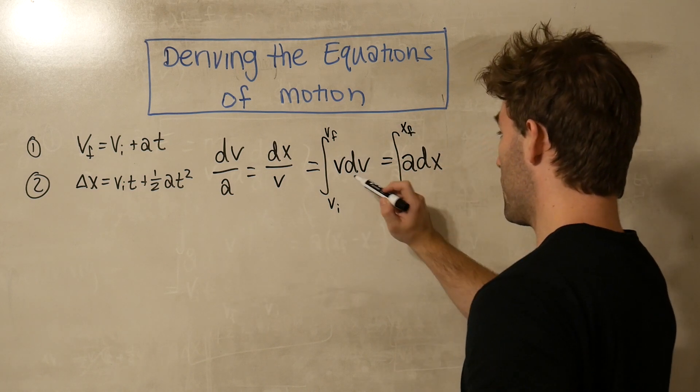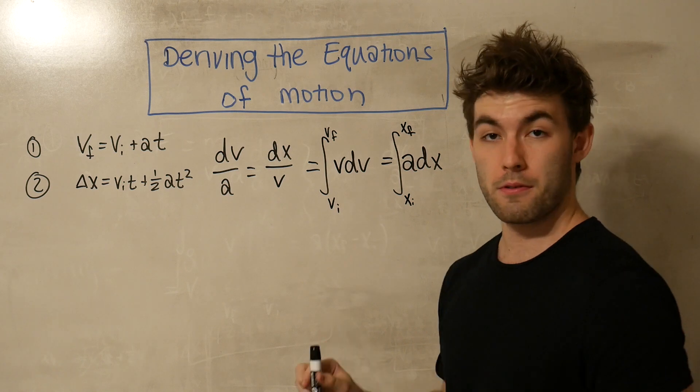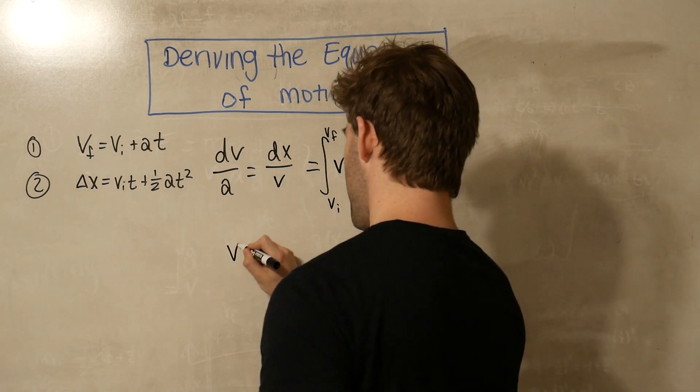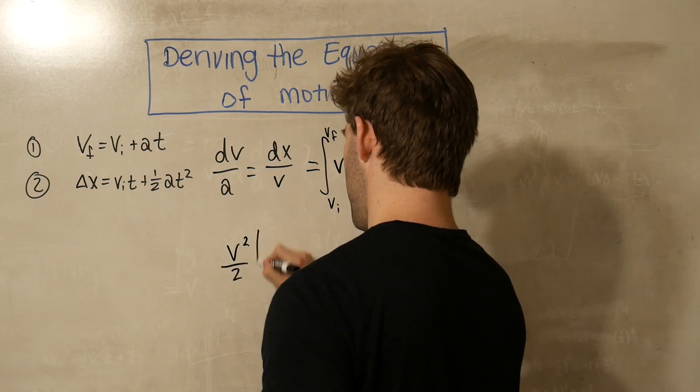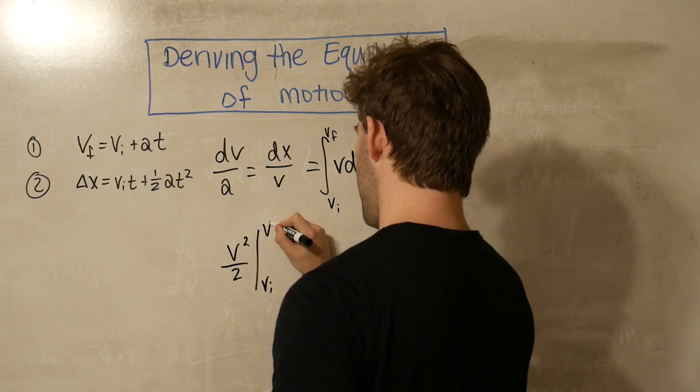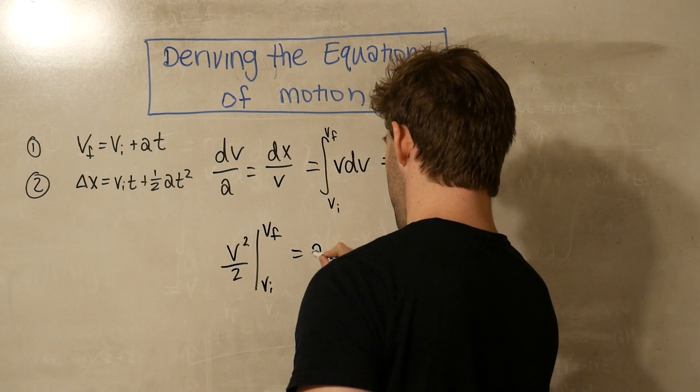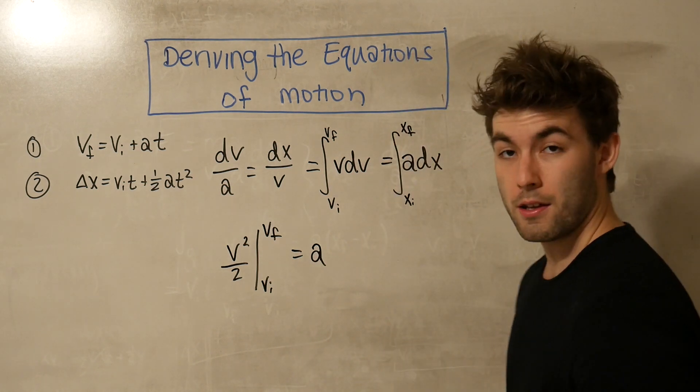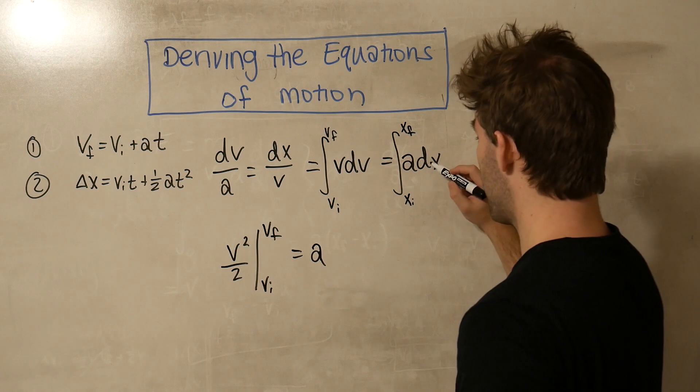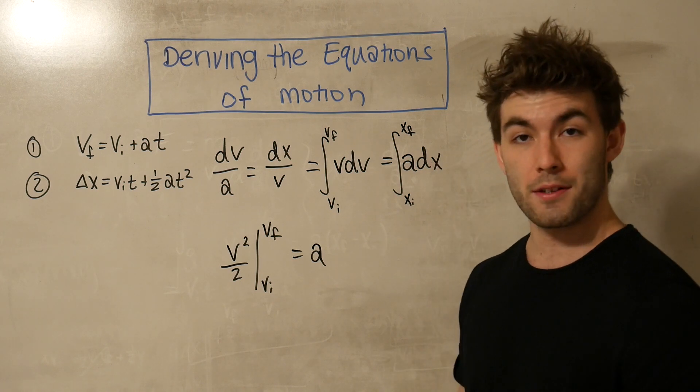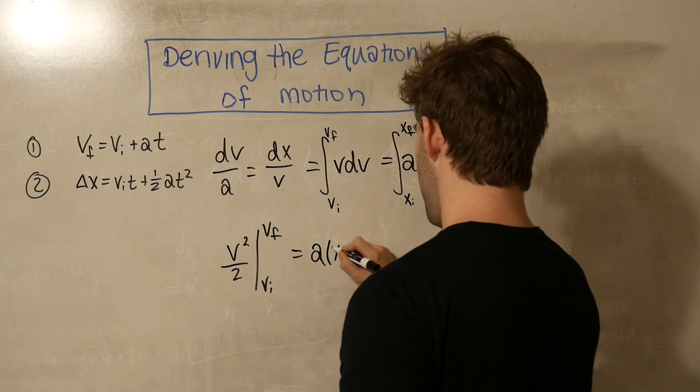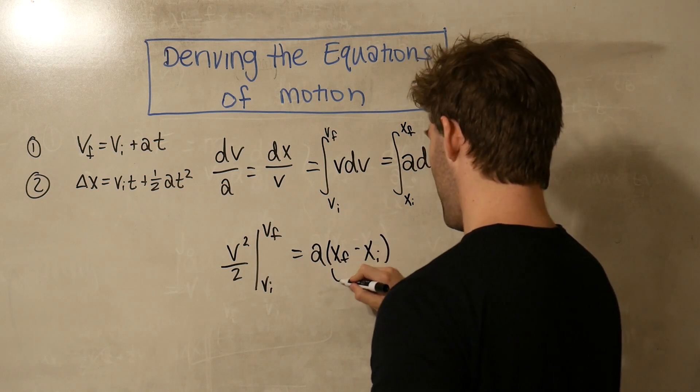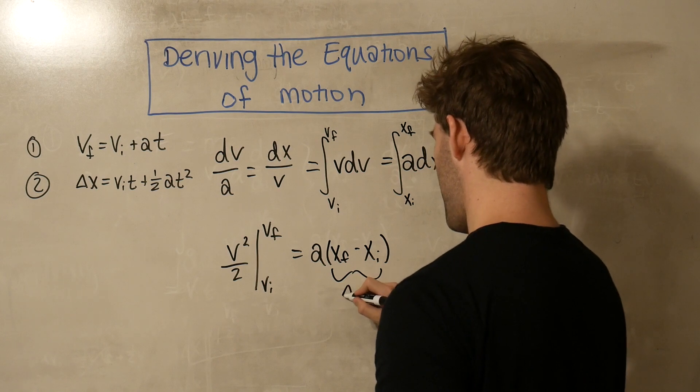So when we integrate vdv, the integral of v with respect to dv is just going to be v squared over 2. So this is going to be v squared over 2 from vi to vf. Since there is no x term attached to the a, the integral with respect to dx is just going to be the difference of the limits. So it's just going to be a xf minus xi. And this whole thing really is just delta x.